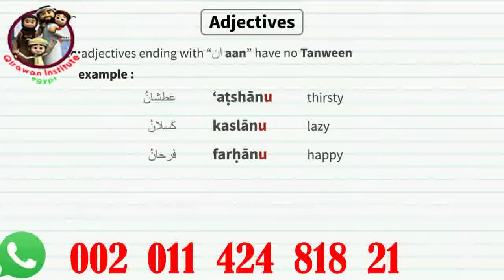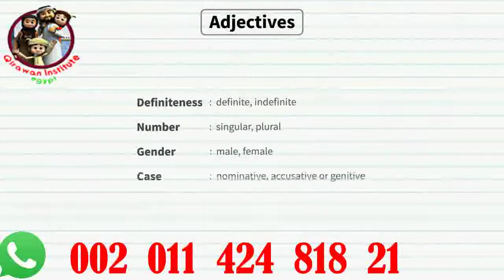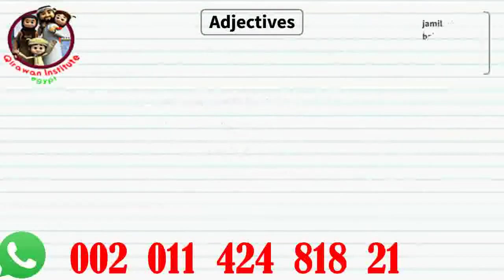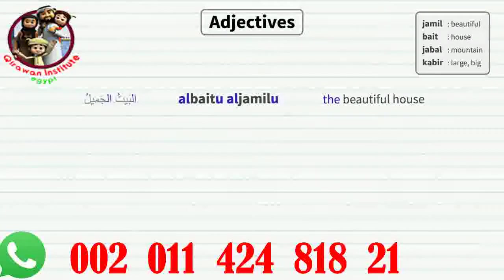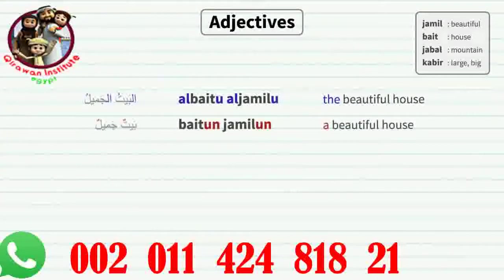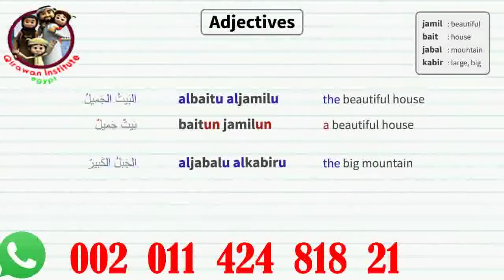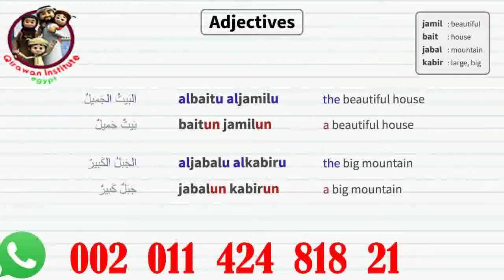An adjective describes a noun. In Arabic, when you're using an adjective with a noun, the adjective must agree with the noun in definiteness, number, gender, and case. For example, 'the beautiful house' is al-baytul jamilu — the literal meaning is 'the house, the beautiful.' Both the noun and adjective are in the same definite state. 'A beautiful house' is baytun jamilun — both are in indefinite state. Similarly, 'the big mountain' is al-jabalul kabiru, and 'a big mountain' is jabalun kabirun.